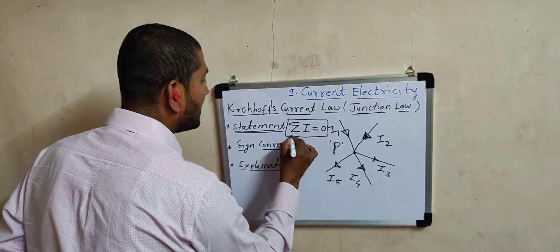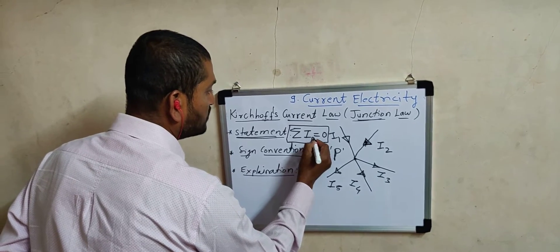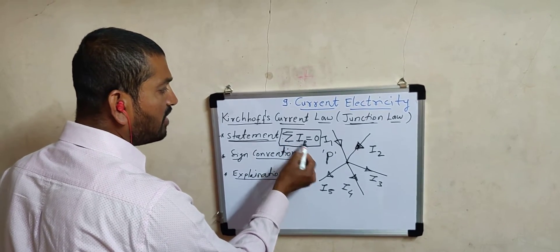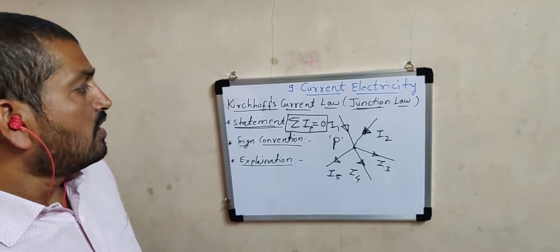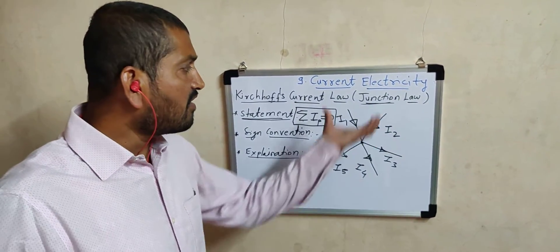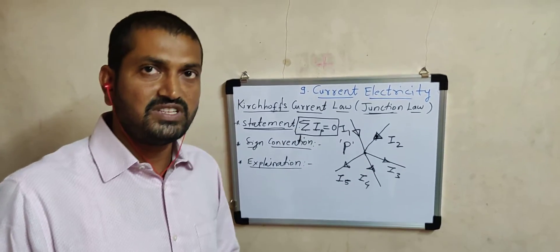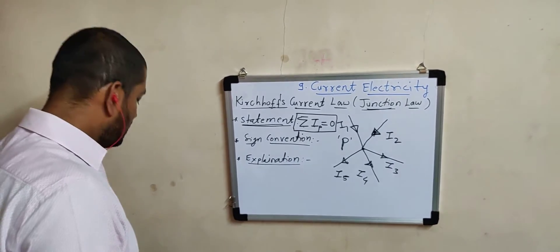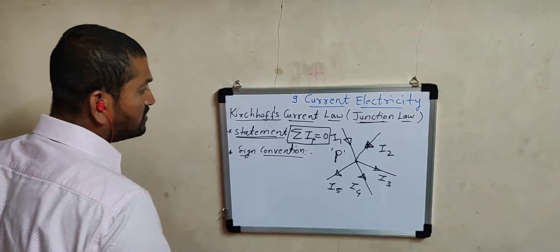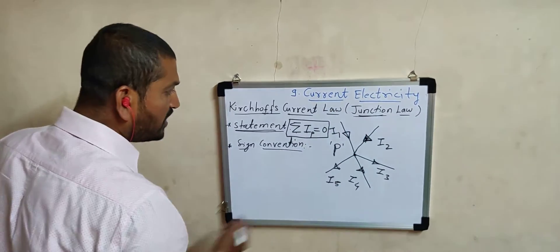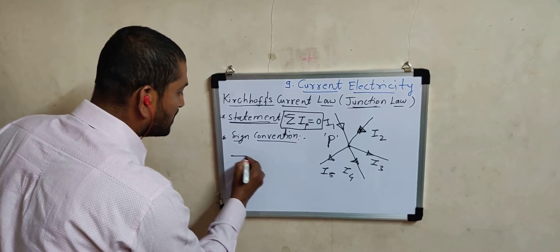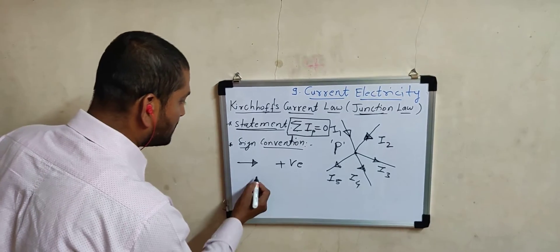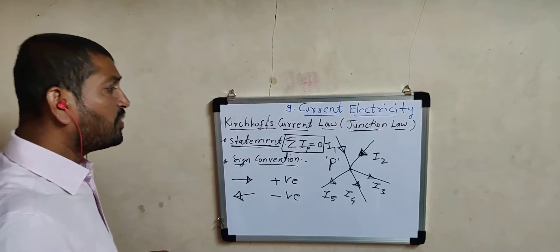The algebraic sum of all the currents at any junction is always equal to zero. Since some currents are approaching the junction and some are going away, there is a need for a sign convention. Those currents coming towards the junction are taken as positive, while those currents leaving or going away from the junction are taken as negative.